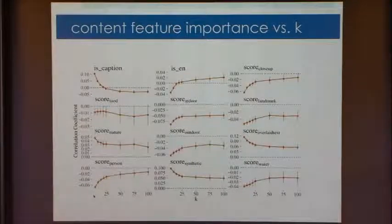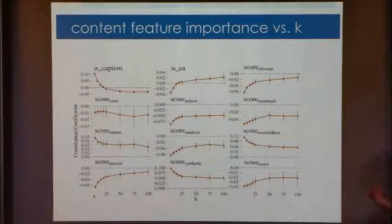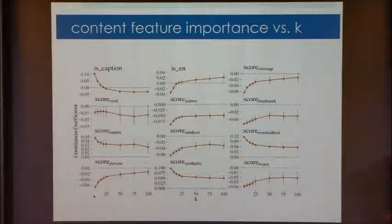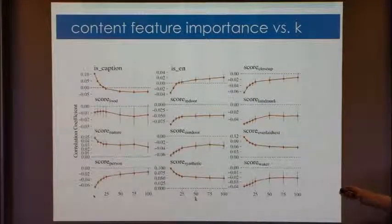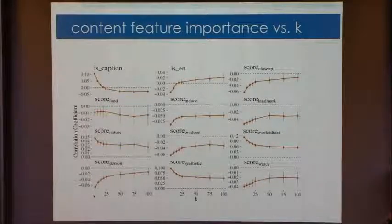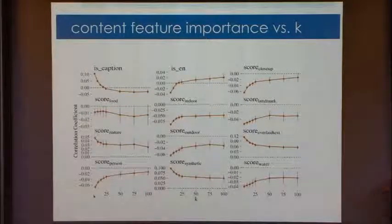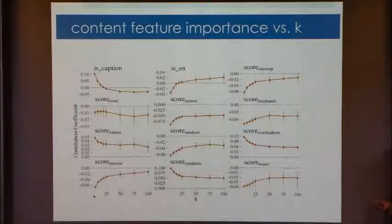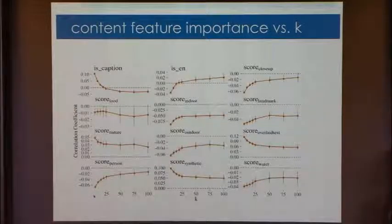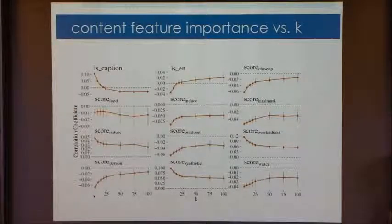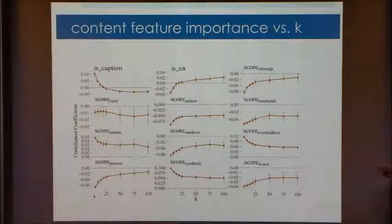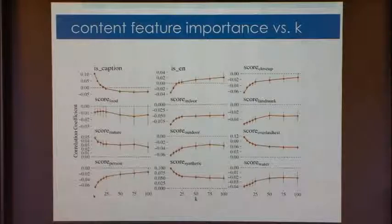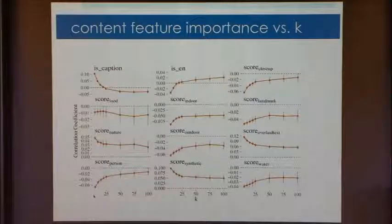Then there's properties of the content. For the most part, it doesn't really seem to matter. Is it indoor, outdoor? Does it have a person or not? What does tend to matter is whether it has a caption, whether it has overlaid text, and whether it's synthetic. So overlaid text and synthetic tend to be properties of memes, and memes kind of by definition are pretty viral and tend to spread. And again, these content features matter less and less the longer you've observed the cascade.